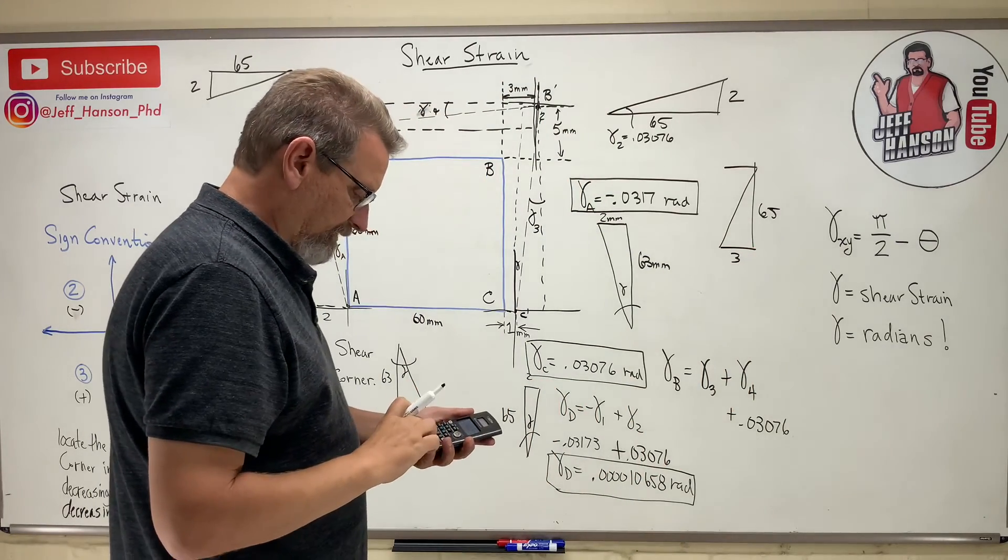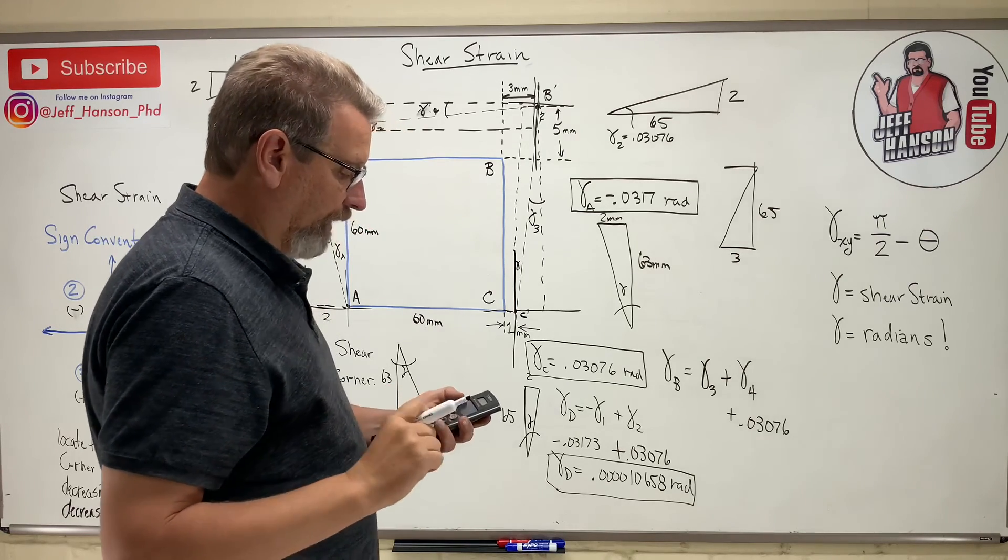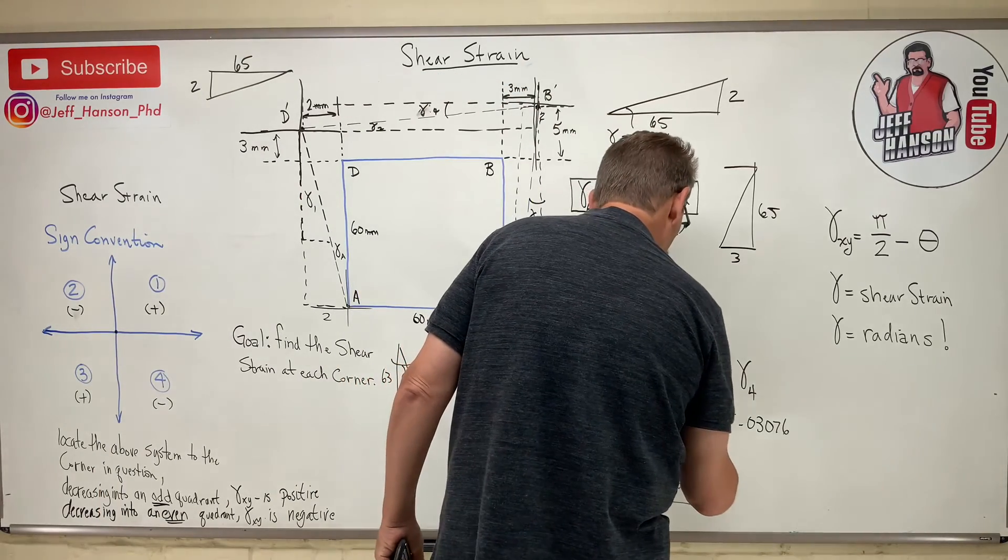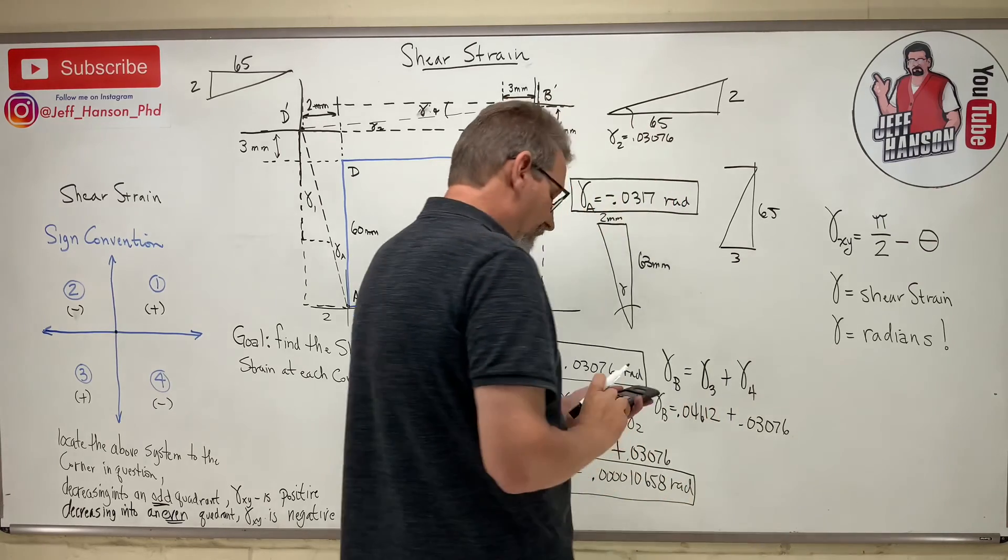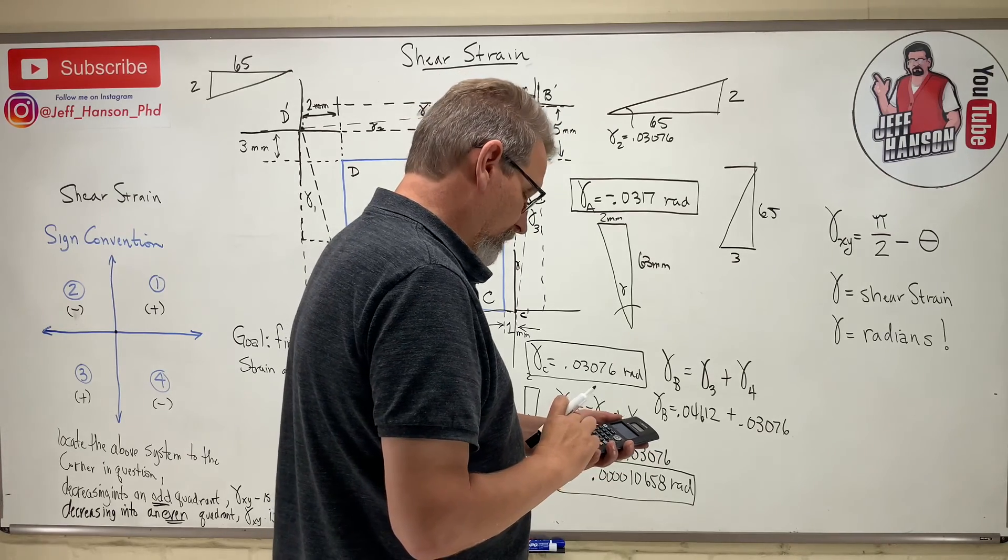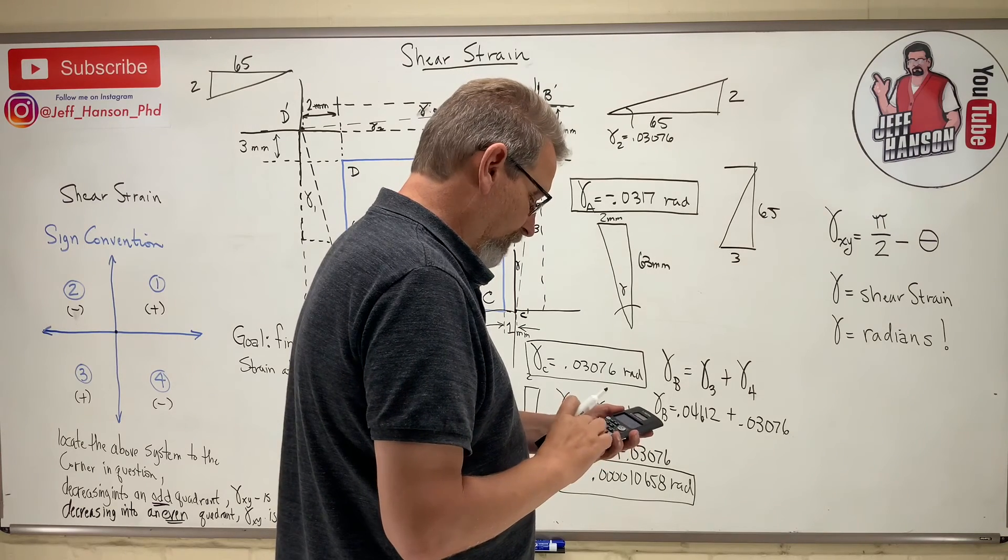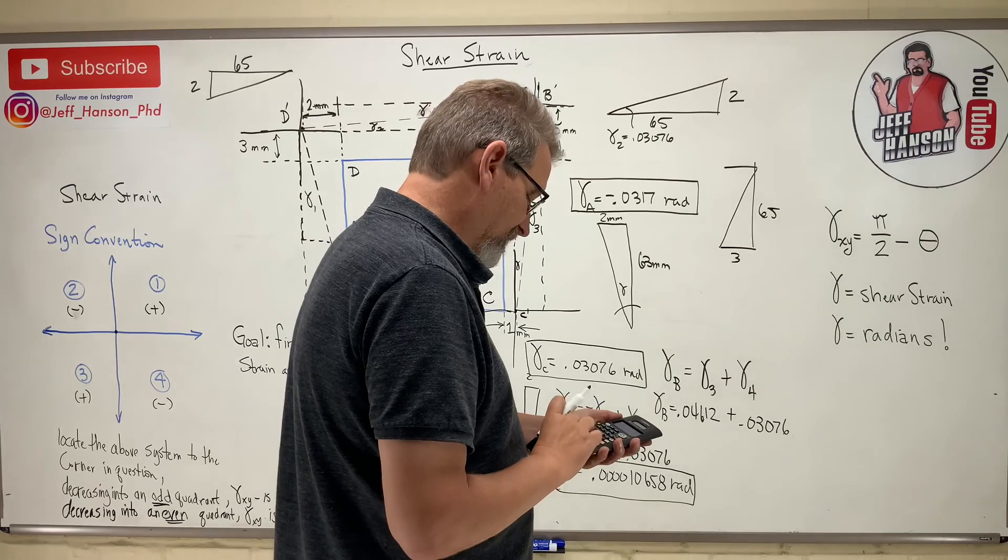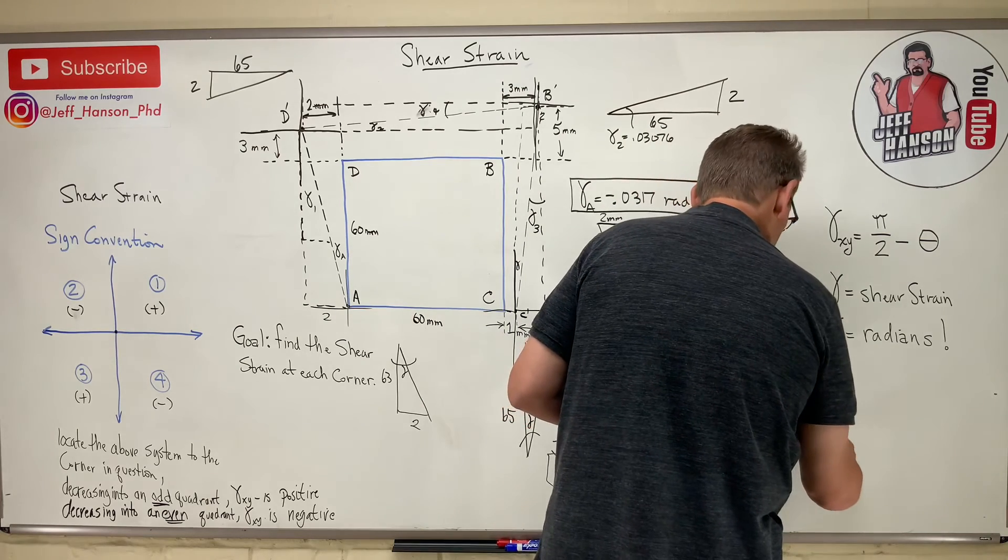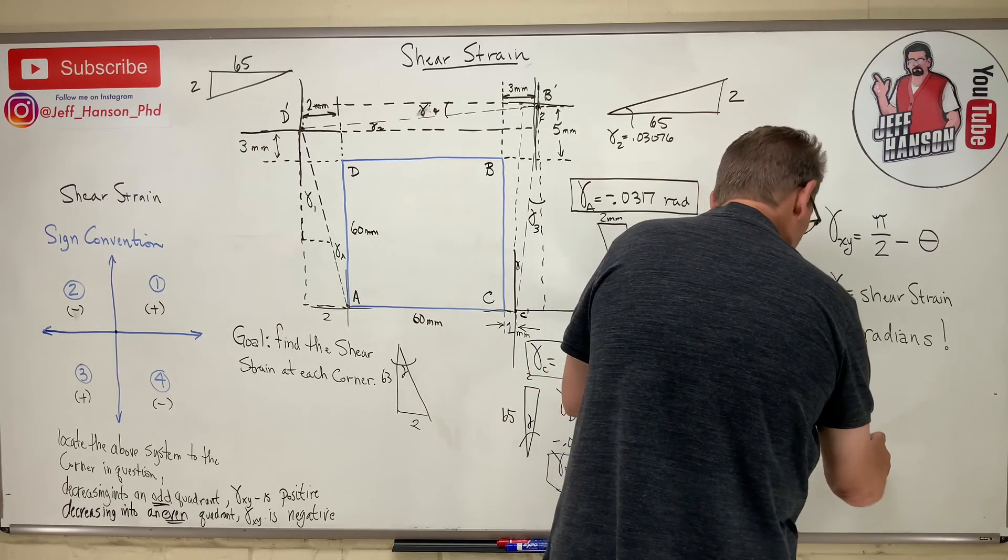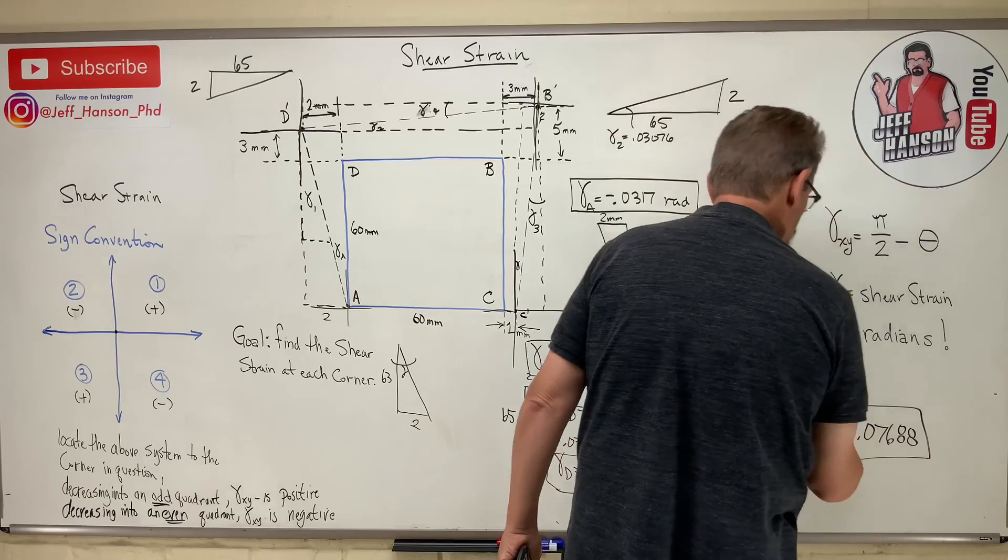So 3 divided by 65 equals inverse tan equals 0.04612. So add that to plus 0.03076. 0.04612 plus 0.03076 equals gamma B equals 0.07688 positive.